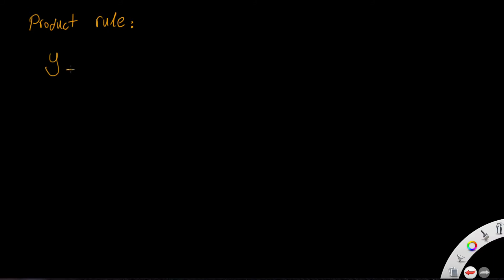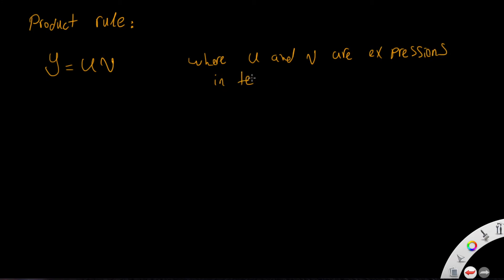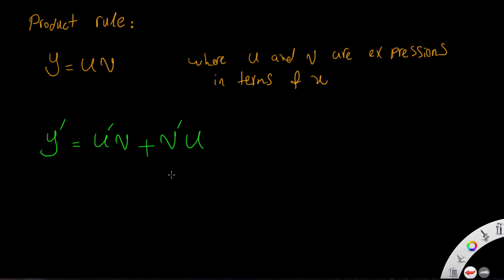For example, y is the product of two functions u and v, where u and v are expressions in terms of x. When you want to differentiate y, the product rule states: differentiate u times the second function v, then plus the differentiation of the second function v prime times the first function. So it is u prime times v, plus v prime times u.